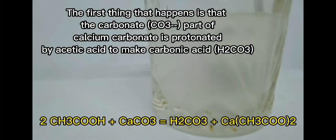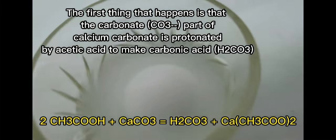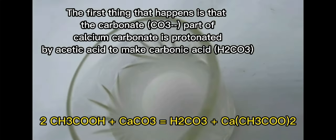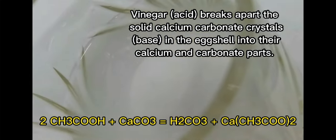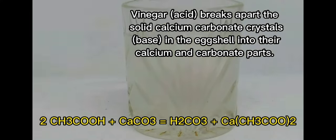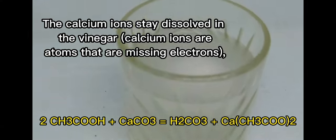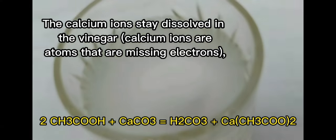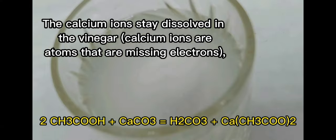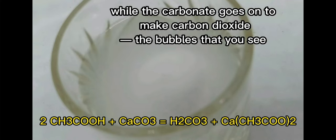The first thing that happens is that the carbonate part of calcium carbonate is protonated by acetic acid to make carbonic acid. Vinegar breaks apart the solid calcium carbonate crystals in the eggshell into their calcium and carbonate parts. The calcium ions stay dissolved in the vinegar. Calcium ions are atoms that are missing electrons.